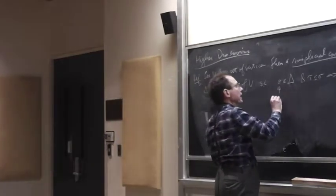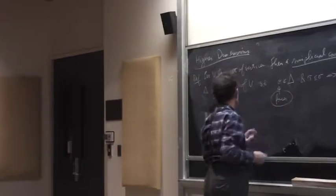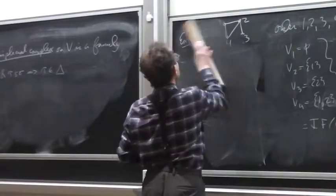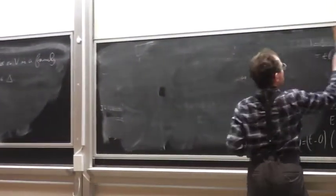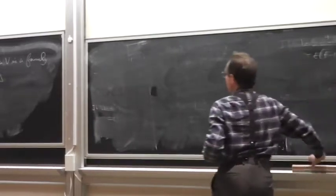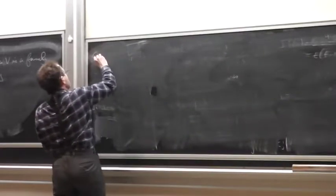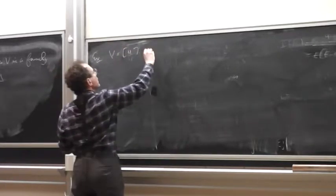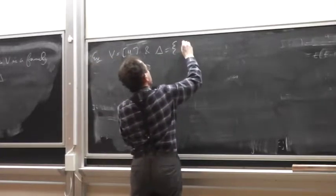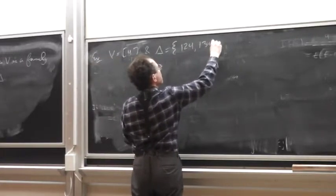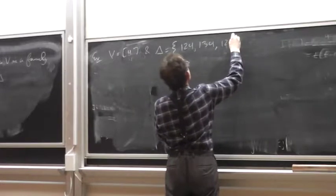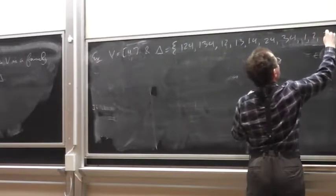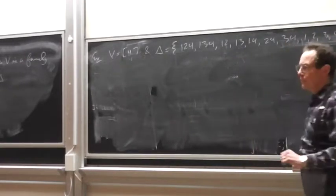These things are called faces, the elements in delta. So again, an example is worth a thousand definitions. Give you under work. So V could be, say, the numbers from 1 to 4. And delta could be the following set of them. 1, 2, 4, 1, 2, 1, 3, 4, 1, 2, 1, 3, 4, 2, 4, 2, 4, 3, 4, 1, 2, 3, 4, n, 2, 7. Right?